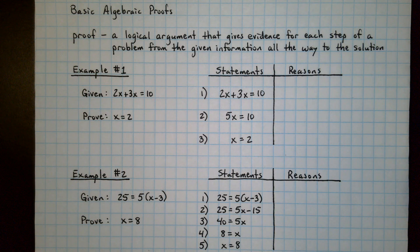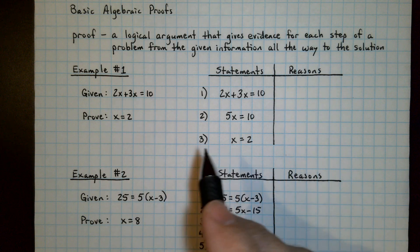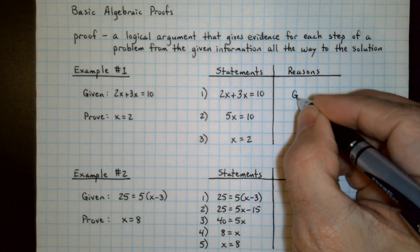When solving an algebraic proof, you're trying to provide reasons for each step along the way. Those reasons are typically going to be properties like the addition property of equality, or the distributive property, or the symmetric property. In most, if not all, proofs, the first reason is actually given.